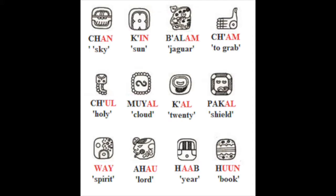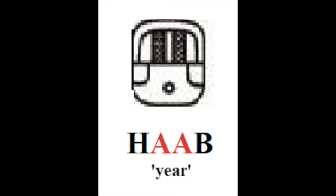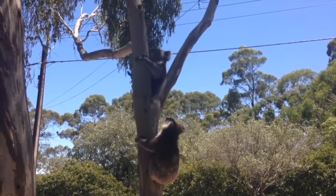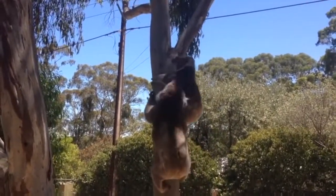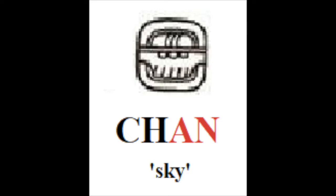Please note that the alarm sounds are marked in red. The first example is the word HAB, meaning 'year.' In this word we have the long A sound, which is the alarm or distress sound. The second example is the word CHANG, meaning 'sky,' and the part of the word that is the alarm or distress part is AN.